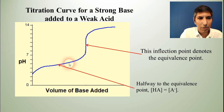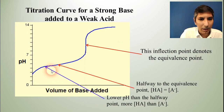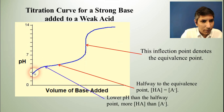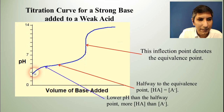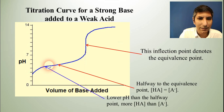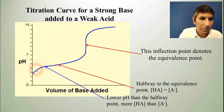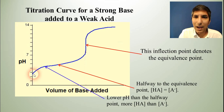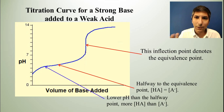Now let's look at what predominates on either side of that halfway point. At any point before the halfway point, what predominates is the acid — you have more HA, more of the weak acid. At the very beginning of the titration, we haven't added any base at all, so the only thing you have is HA.